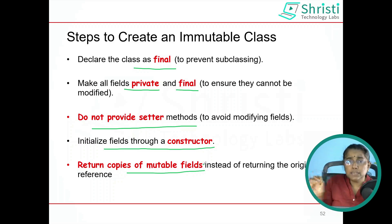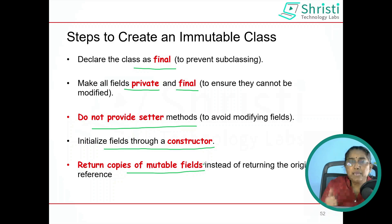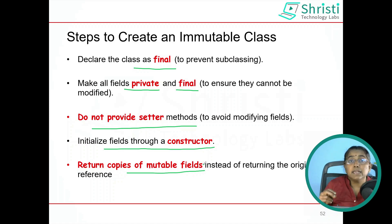To put it in a nutshell, to create an immutable class: your class should be final, your instance variables should be private and final, you should have a parameterized constructor, you should have only getter methods, and if your class has mutable fields, rather than returning the original reference, create a copy and return that.